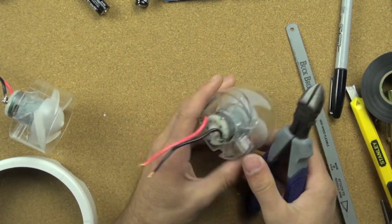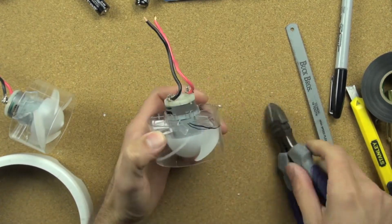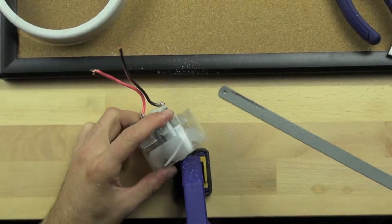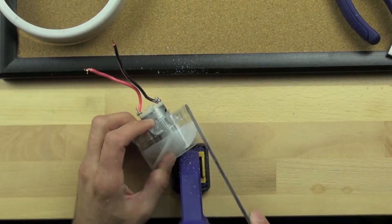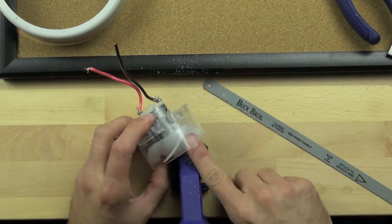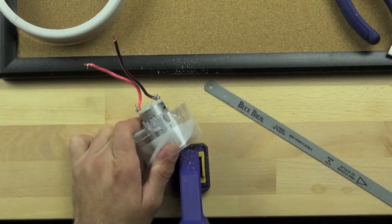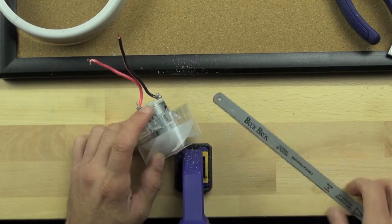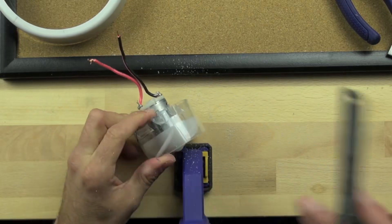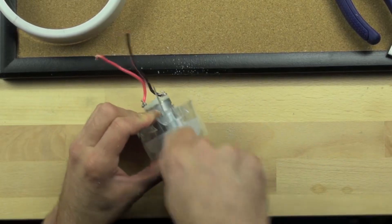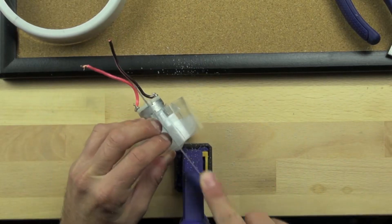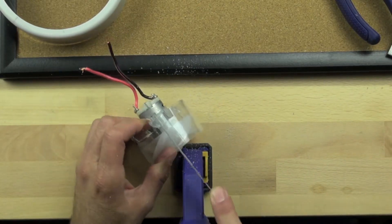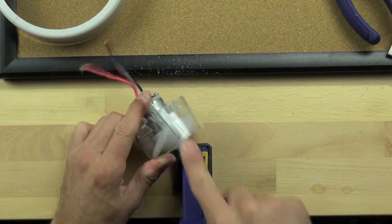We're going to take our hacksaw blade and clamp the motor in place as best we can. We're going to take our hacksaw blade and trim off, just basically cut straight through the outer housing, the outer clear plastic piece that goes around the blades. We want to make sure that we line the two propeller blades up in such a way that when we cut through the outer housing we don't cut into the propeller blades because we want to use those as our wheel.